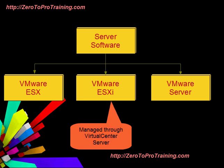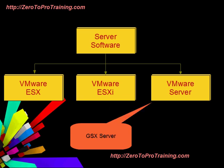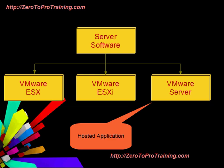VMware ESXi hosts cannot be managed directly from the console; management is performed through a virtual center server. VMware decided to give ESXi away for free in July 2008. VMware Server was formerly called GSX Server. It is offered as freeware for non-commercial use, and it is also possible to create virtual machines with it. It is a hosted application, meaning it runs on top of an existing Linux or Windows operating system.